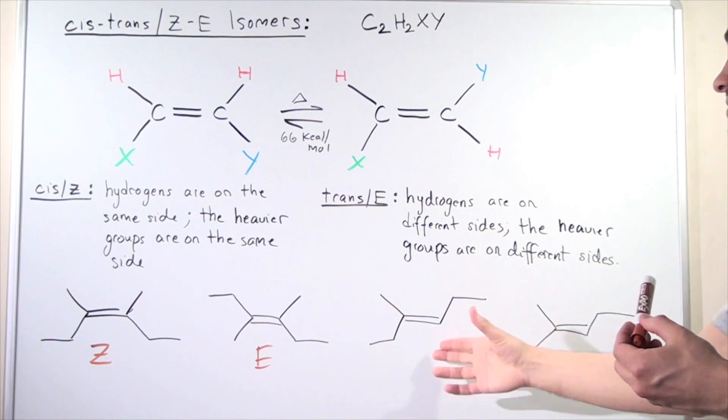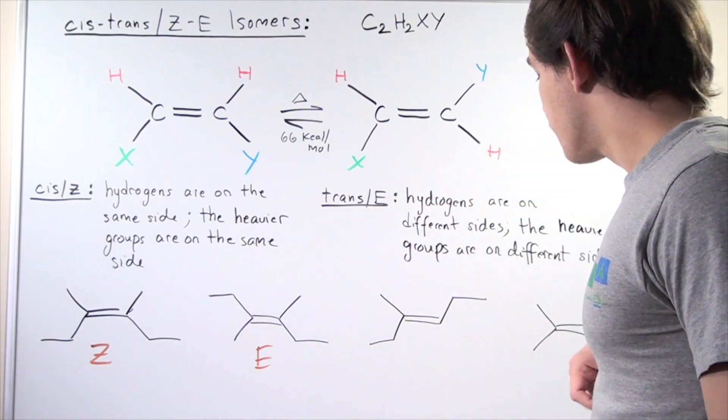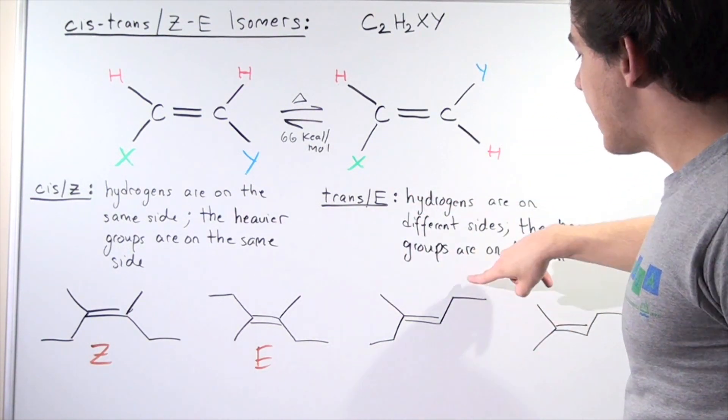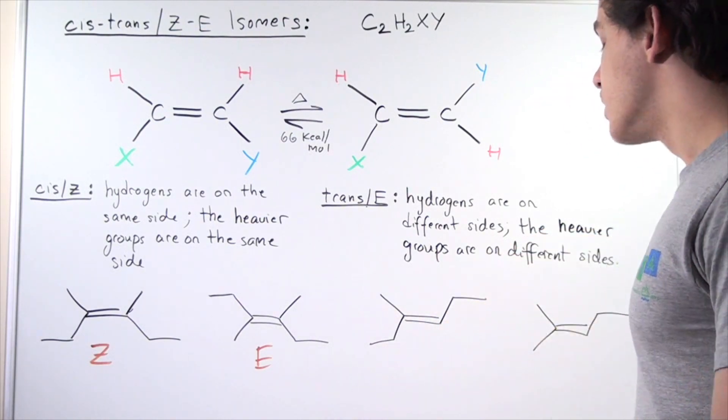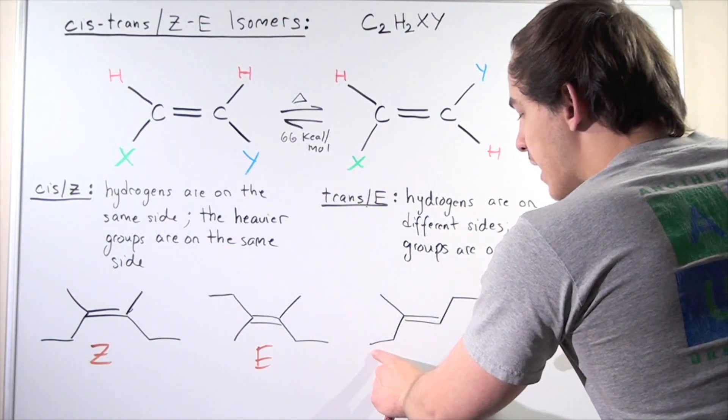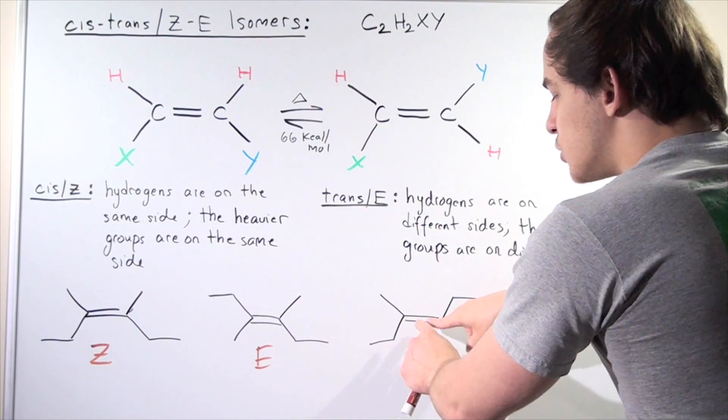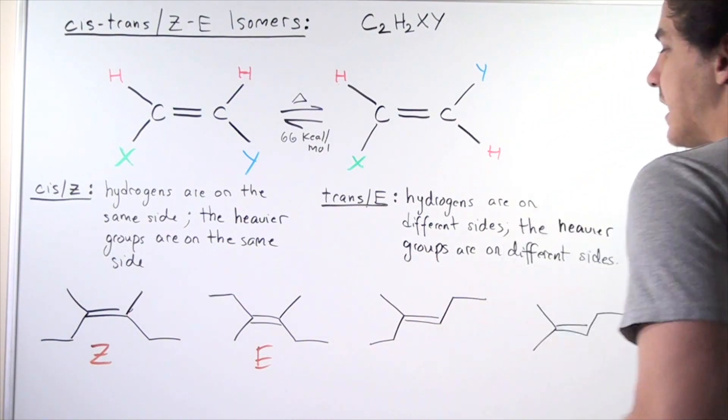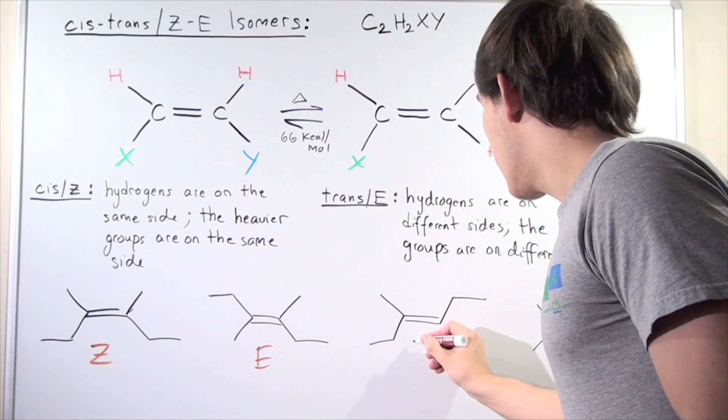What about this guy? Well, now we have a methyl, we have an H group, we have an ethyl, and an ethyl. So once again, we have the two ethyls on different sides, the two heavier groups. And that means we must have our E.